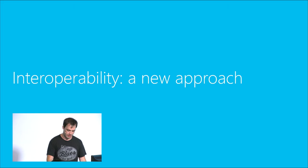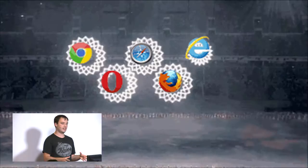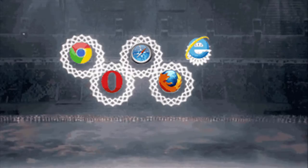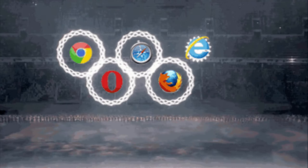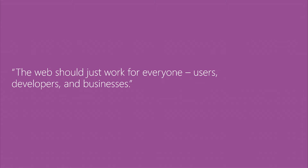The key focus for the rendering engine was interoperability. It's kind of a buzzword from that video — let's make it real. We set up a mission statement that really helps us focus: the web needs to just work for everybody. That's important not just for users, it's important for developers, but it's also important for businesses, which Microsoft caters to quite a bit.